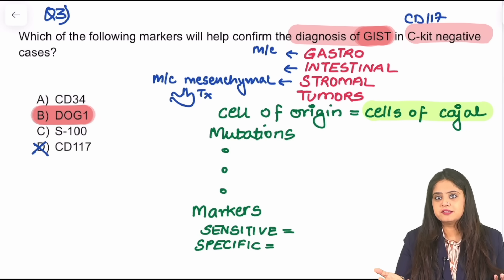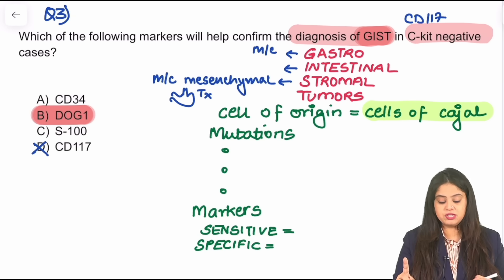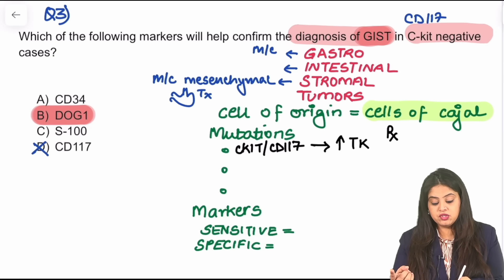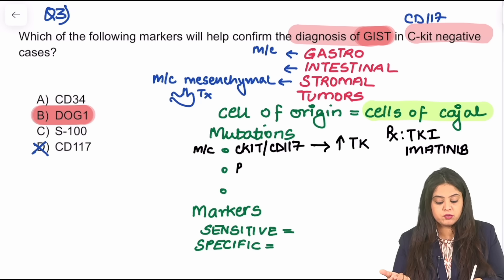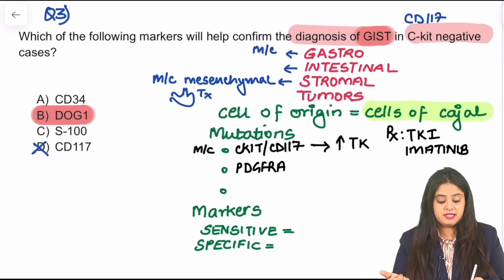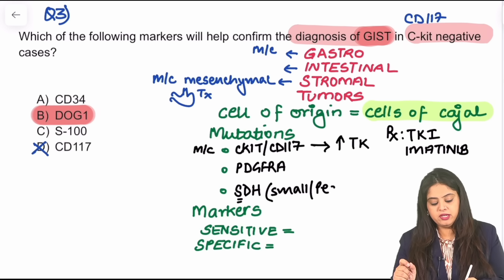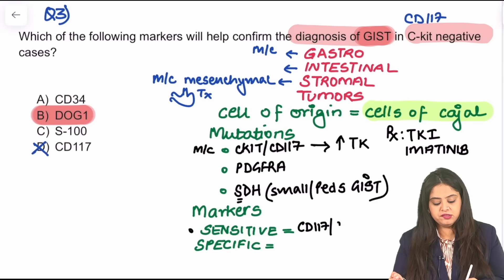In GIST, mutations occur in these normal pacemaker cells. The most common is the c-kit or CD117 mutation, which leads to increased tyrosine kinase levels — that is why tyrosine kinase inhibitors like imatinib are used for treatment. Other mutations include PDGFRA mutations, and in pediatric patients, SDH (succinate dehydrogenase) mutations can be seen. The sensitive marker is CD117 or c-kit, but if that is negative, the specific marker DOG1 is the answer.